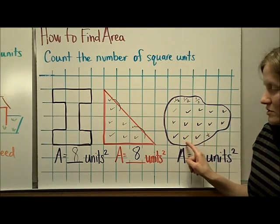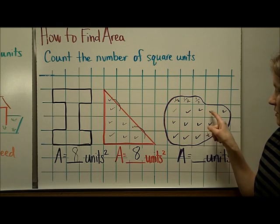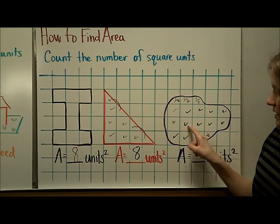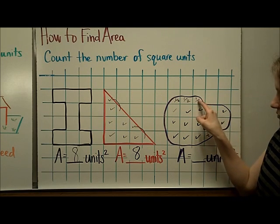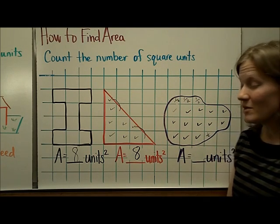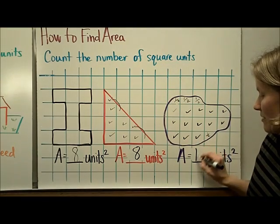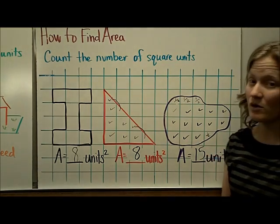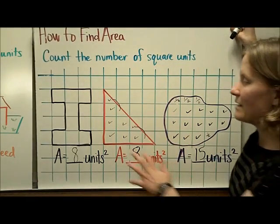So now I'm going to count my full square units and add them, then add in my halves. 1, 2, 3, 4, 5, 6, 7, 8, 9, 10, 11, 12, 13. These together would make 14 and 15. So a good estimate for the total number of square units that this shape takes up is 15 square units. Remember that this one is an estimate, not an exact area.